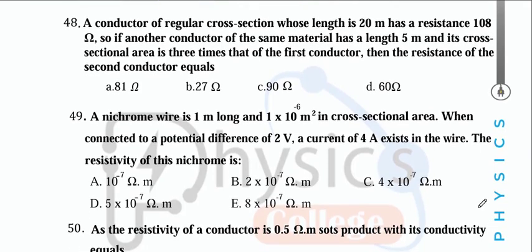A conductor of regular cross-section with length L1 = 20 m and resistance R1 = 108 Ω. Another conductor of the same material has resistivity ρ1 = ρ2, and length L2 = 5.